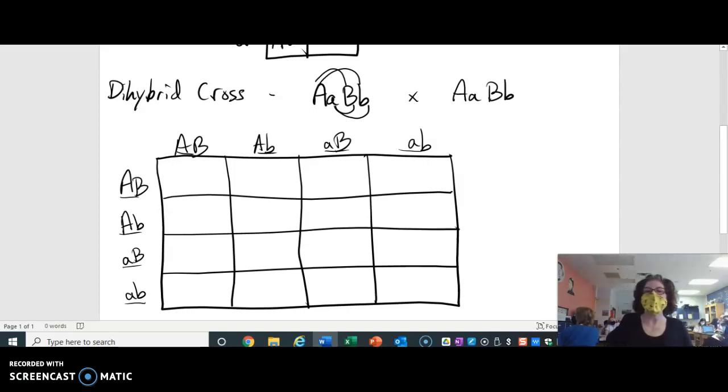For some crosses, maybe this parent will be all dominant letters, and maybe this parent would be all recessive. Then it's not a dihybrid cross. It's just a two-trait cross that you have to figure out.